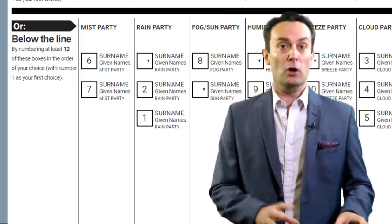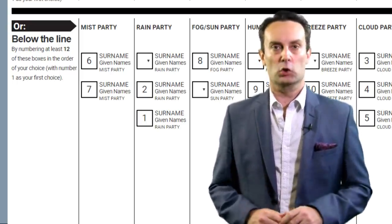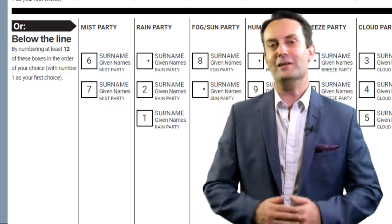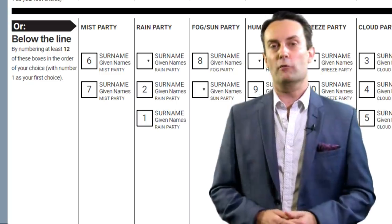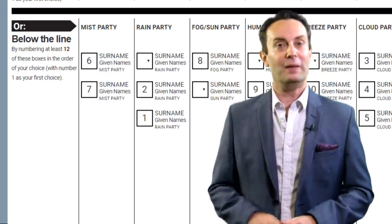When voting below the line, you have maximum control over your preferences and can vote for anyone in any group in any order as long as you number at least 12 boxes and don't repeat or skip any numbers.